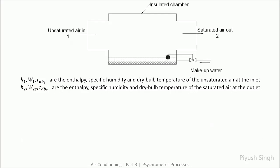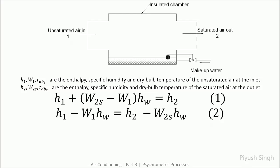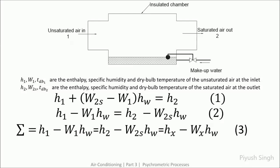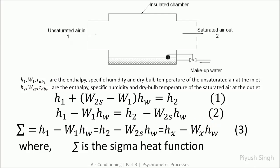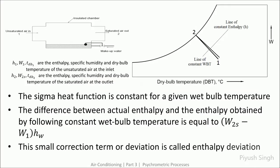In practice, this is not exactly the case. The term H1 minus W1·HW, generally expressed as HX minus WX·HX, is called the sigma heat function. This sigma heat function is a constant for a given wet bulb temperature; it is the difference between the actual enthalpy and the enthalpy obtained by following a constant wet bulb temperature line. The small correction term is known as enthalpy deviation.